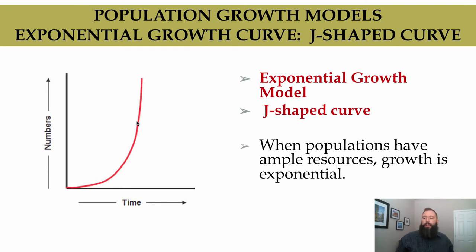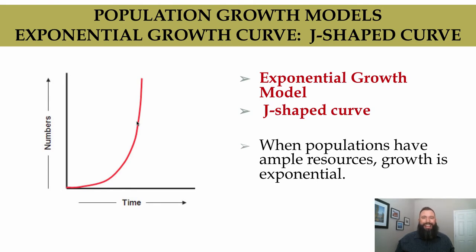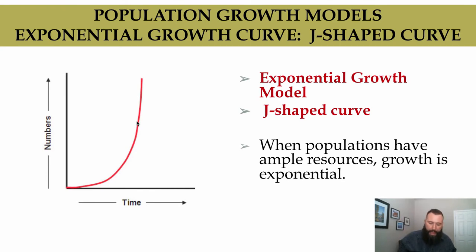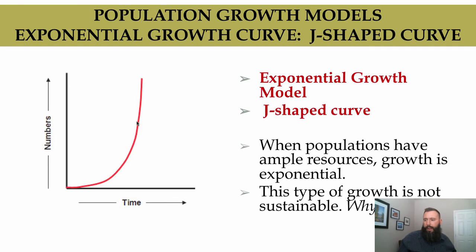This happens because populations have ample resources — they're living at their biotic potential, all of their needs are being met: plenty of food, water, nutrients, habitat and space, and partners with whom to reproduce. This type of growth can happen in the wild, but it won't be sustainable. This type of growth is not sustainable in ecology.